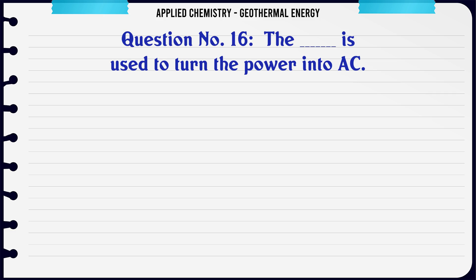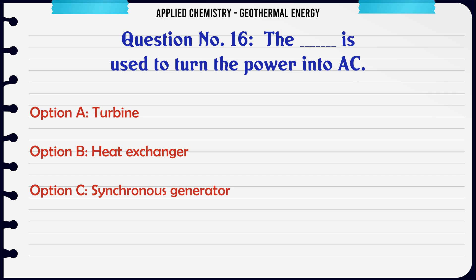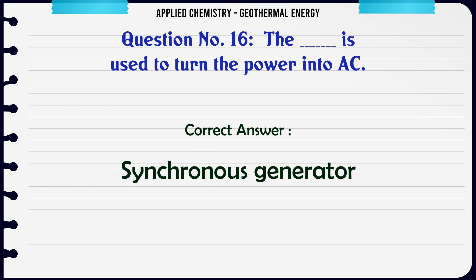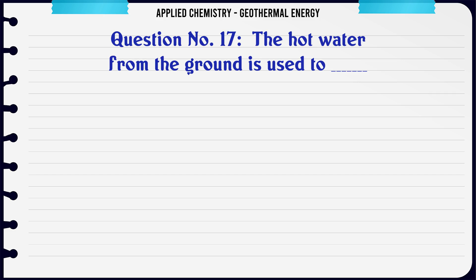DC is used to turn the power into AC via: A: Turbine, B: Heat exchanger, C: Synchronous generator, D: Valve. The correct answer is synchronous generator.